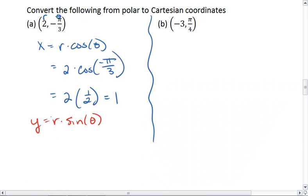Which tells me that y equals 2 times the sine of negative pi-thirds. If we use our unit circle, sine of negative pi-thirds is going to be negative root 3 over 2. Which means that our sine value is just negative root 3.